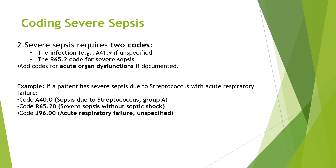Coming to coding severe sepsis: severe sepsis requires two codes. The first is the infection/sepsis code as primary, and secondary we assign severe sepsis from the R65.2 series. R65.20 is for severe sepsis without septic shock, and R65.21 is for severe sepsis with septic shock. Example: patient has severe sepsis due to streptococcus with acute respiratory failure — code A40.0 (sepsis due to streptococcus) as primary, R65.20 (severe sepsis without septic shock) as secondary, and J96.00 (acute respiratory failure, unspecified) last.